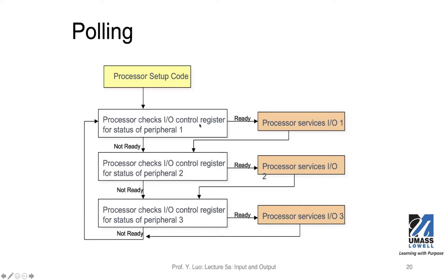But if the peripherals are rarely ready because they are slow or their resource is very tight, then you have to have the processor check all these peripherals again and again, and those CPU cycles are wasted. If the peripherals are ready most of the time and you want very fast response, you might choose to use the processor to do polling. But if these events are rare — if the readiness of the peripherals is relatively low probability — then you're wasting a lot of CPU cycles on polling.